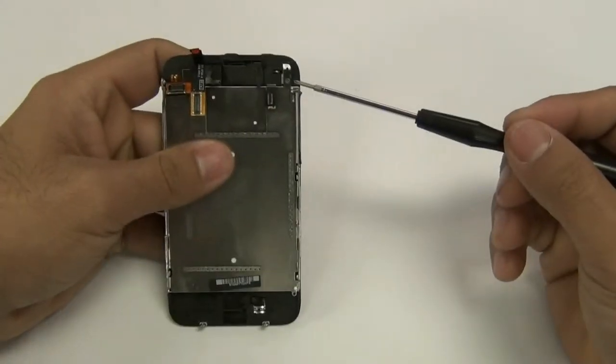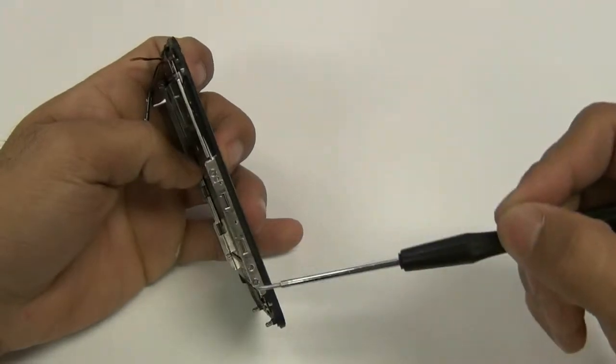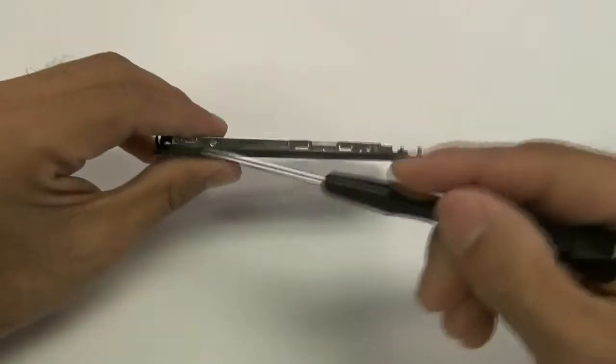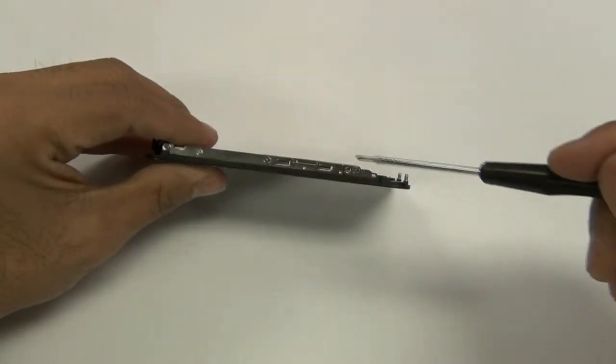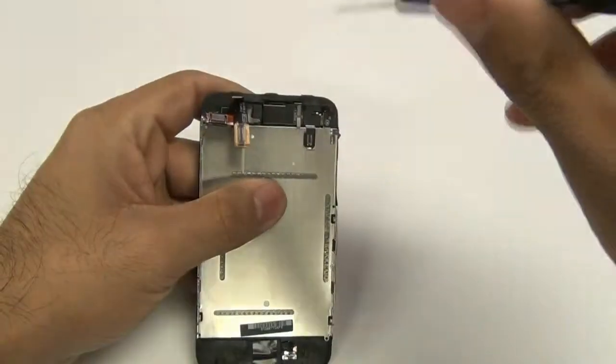With your touchscreen LCD assembly separated, you will now need to remove six screws on the metal back plate, one on the top and three on the sides, two are on one side and three are on the other side.